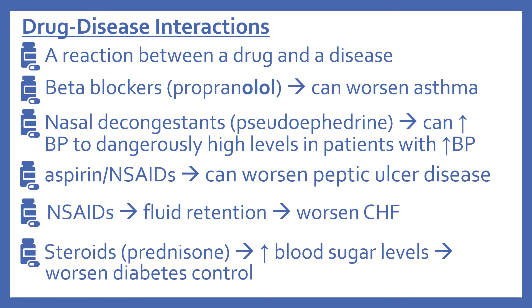Now we'll look at drug-disease interactions. This is a reaction between a drug and a disease. Some examples: Beta blockers such as propranolol can sometimes worsen asthma if they are the non-selective beta blockers. Nasal decongestants such as pseudoephedrine can increase blood pressure to dangerously high levels in patients who already have high blood pressure. Aspirin or the NSAIDs can worsen peptic ulcer disease or stomach problems. NSAIDs can also cause fluid retention, which can worsen congestive heart failure. And steroids such as prednisone can increase blood sugar levels, which can worsen diabetes control.